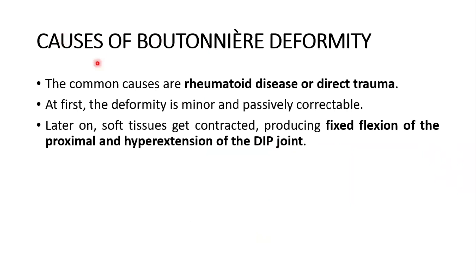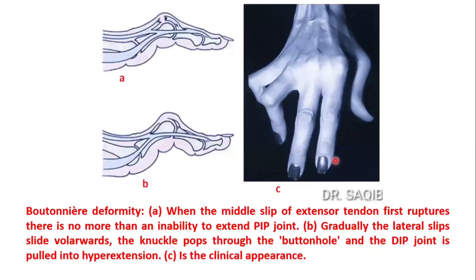The common causes are rheumatoid disease or direct trauma. At first the deformity is minor and passively correctable. Later on, soft tissues get contracted, producing flexion of the proximal interphalangeal joint and hyperextension of the distal interphalangeal joint.